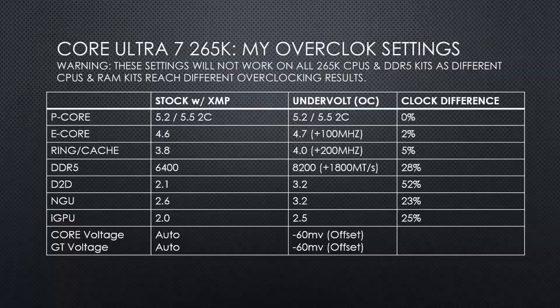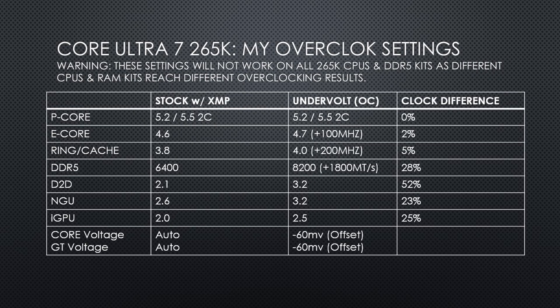The results shown in this video are for my overclocked iGPU, which is currently running at 2500MHz — a 25% increase over the 2GHz stock frequency. I have also undervolted the iGPU by 60mV. I will compare some benchmarks showing the performance difference of 6400MHz memory with the iGPU at its stock 2GHz frequency versus my setup with 8200 megatransfers per second memory and the iGPU at 2.5GHz. How much of an improvement can a 28% increase in memory and 25% increase in graphics core clock give me?